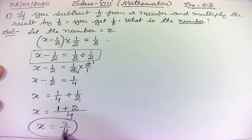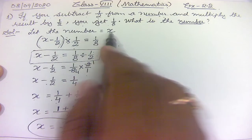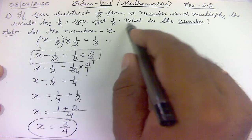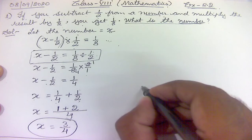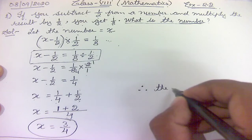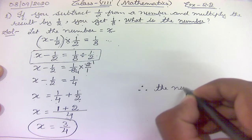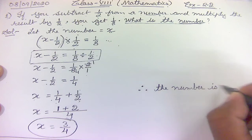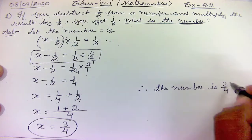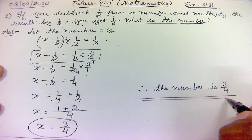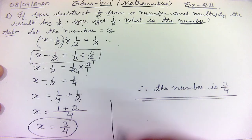Since x was taken as the number we were looking for, therefore the number is 3/4. This is the final result. Now if you just want to cross-check whether your answer is right or wrong, we will substitute back.